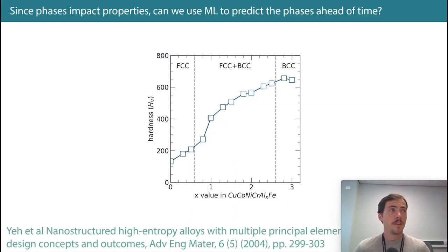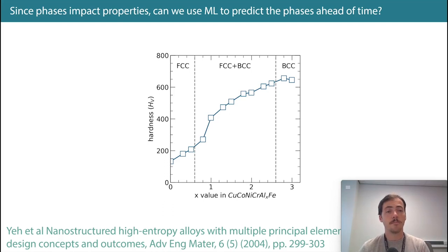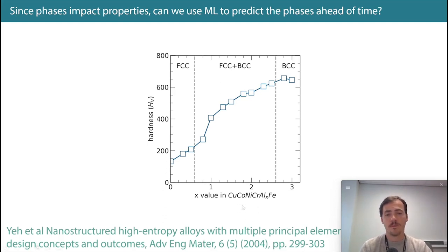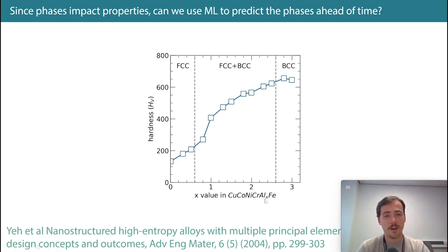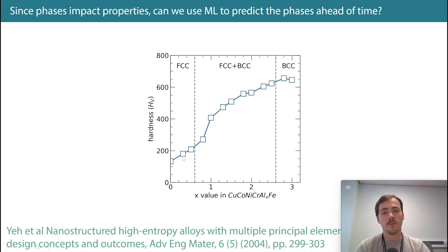We also know that different phases show general trends: FCC phases tend to be more ductile, BCC phases tend to be stronger. In one of the very first papers, published at the same time as the Cantor alloy, they showed that as you increase the amount of aluminum — even a small amount — you see this transition from FCC solid solubility to BCC solid solubility, going through a two-phase region with a rise in hardness.